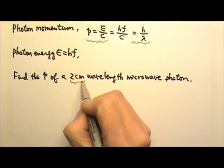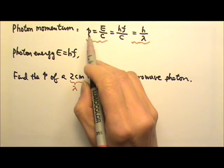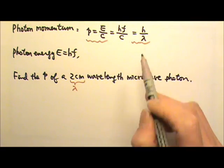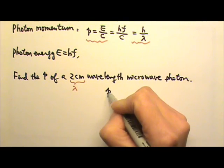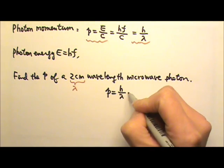We're given the wavelength so it would be convenient to use P equals H over lambda. So the momentum equals H over lambda.